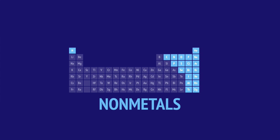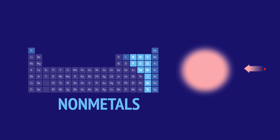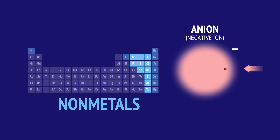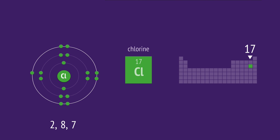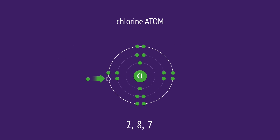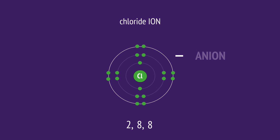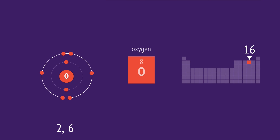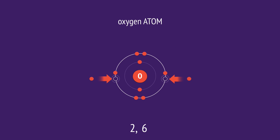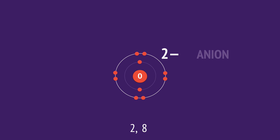Nonmetals have outer electron shells that are either full or close to full. Nonmetals tend to gain electrons to complete their outer shell. In doing so, they form negative ions, or anions. For example, chlorine in group 17 has 7 valence electrons. A chlorine atom tends to gain an electron to complete its outer shell, forming a chloride ion with a 1− charge. Oxygen in group 16 has 6 valence electrons. An oxygen atom tends to gain two electrons to complete its outer shell, forming an oxide ion with a 2− charge.